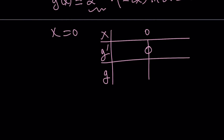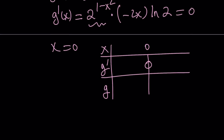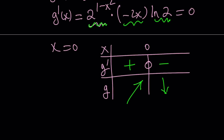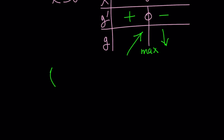We need to check whether g prime is positive or negative. This factor is always positive and ln 2 is positive. It depends on x: if x is positive, the derivative is negative; if x is less than 0, it is positive. We have a different scenario here — the function increases and then decreases, giving us a maximum at x equals 0. So the point (0, 2) is a maximum.